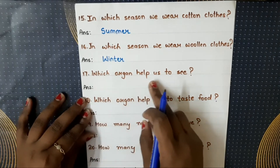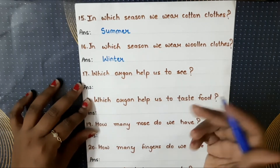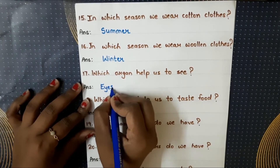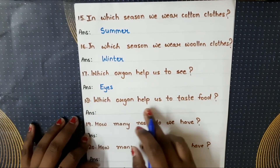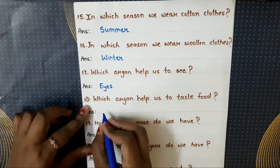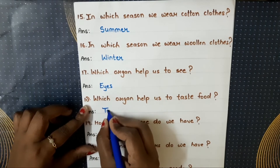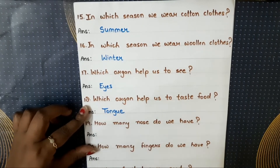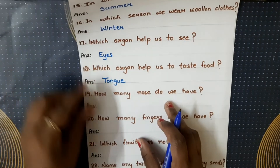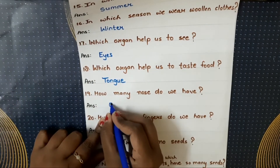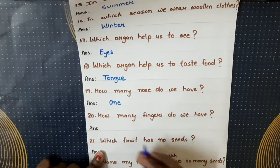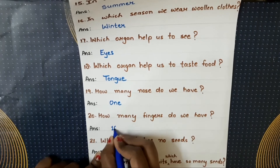Which organ helps us to see? Humein dekhne mein kaunsa organ help karta hai? The answer is eyes. Which organ helps us to taste food? Food ko taste karne ke liye kaunsa organ help karta hai? The answer is tongue. How many noses do we have? Hamare paas ek nose hai. How many fingers do we have? We have ten fingers.